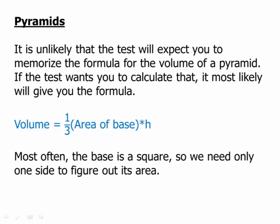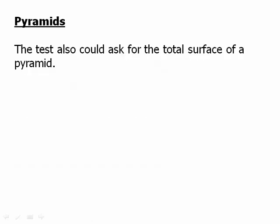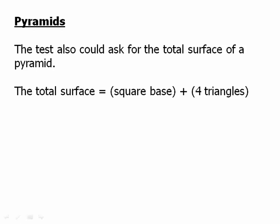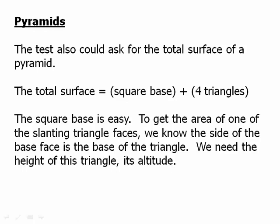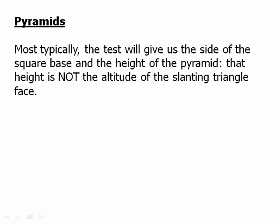Most often the base is a square, so we only need one side to figure out its area. The test could also ask for the total surface area of a pyramid, which equals the square base plus the four triangles. To get the area of one of the slanting triangle faces, we know the side of the base is the base of the triangle, and we need the height of the triangle — its altitude. The test will typically give us the side of the square base and the height of the pyramid, but the height of the pyramid is not the altitude of the slanting triangle face.